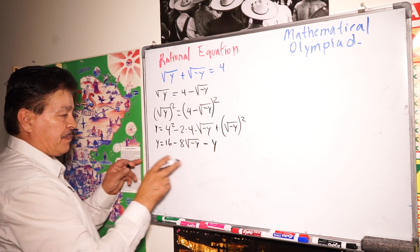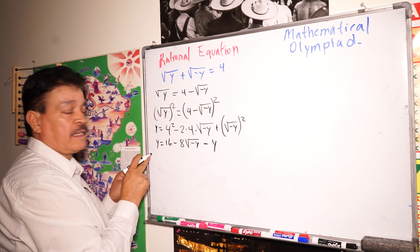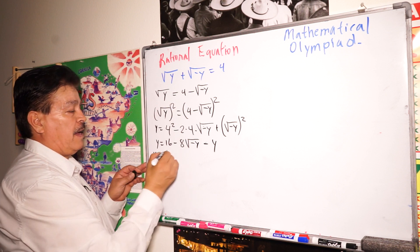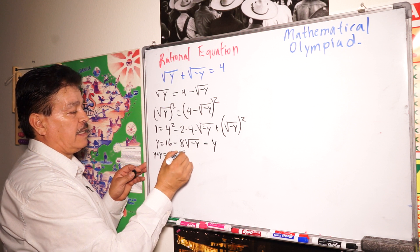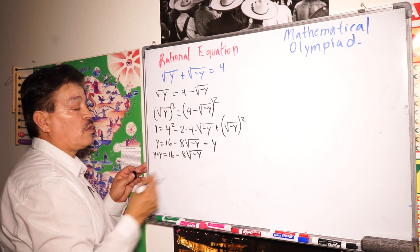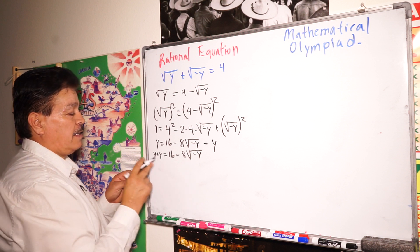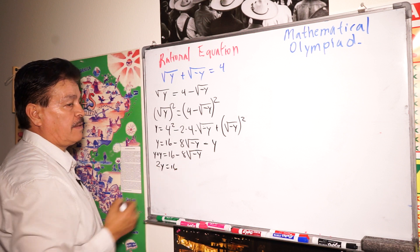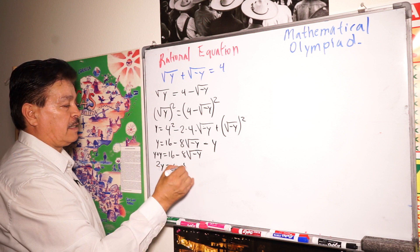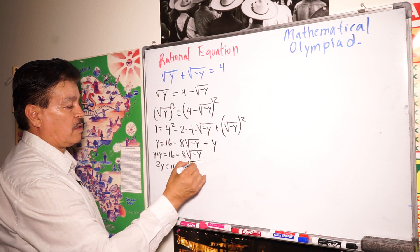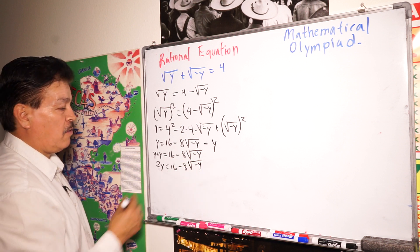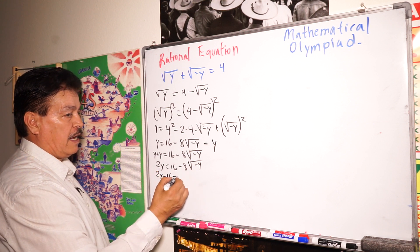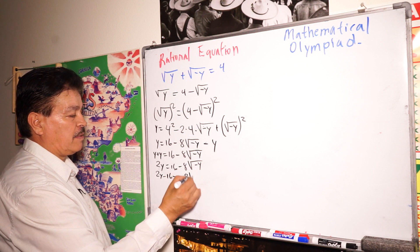Now move the negative y to the left side. We are going to have y plus y equals 16 minus 8 times square root of negative y. Simplifying the left side gives 2y equals 16 minus 8 times square root of negative y. Now move 16 to the left side: 2y minus 16 equals negative 8 times square root of negative y.